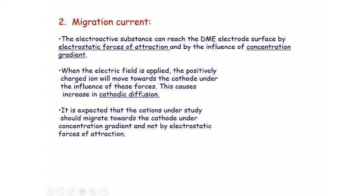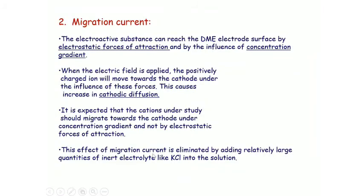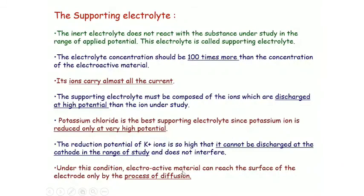Due to migration, cathodic diffusion increases, and it is expected that cations under study should migrate towards the cathode under the concentration gradient and not by the electrostatic force of attraction. The effect of migration current due to electrostatic force of attraction is eliminated by adding relatively large quantities of an inert electrolyte — KCl — to the solution.